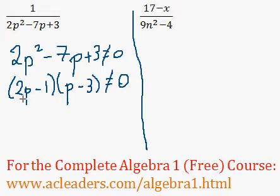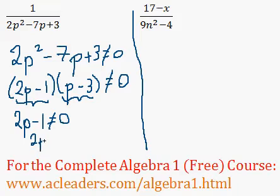So we know that 2p minus 1 times p minus 3 cannot equal 0. Let's look at each binomial individually. 2p minus 1 cannot equal 0, so 2p cannot equal 1. We divide both sides by 2, so p cannot equal one-half.